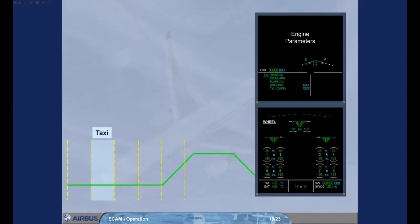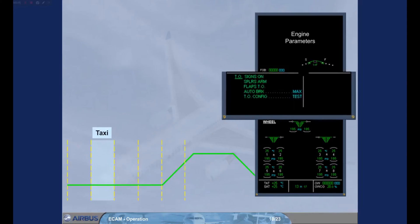Approximately two minutes after the second engine has been started, a takeoff memo appears on the engine warning display. The takeoff memo lists a series of actions required by the crew to prepare the aircraft for takeoff. You can see that there are blue action items remaining, specifically setting the auto brakes to max and testing the takeoff configuration. We will set the auto brakes to max for you.